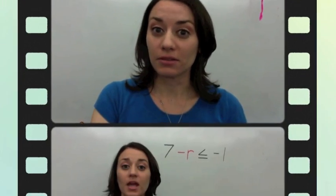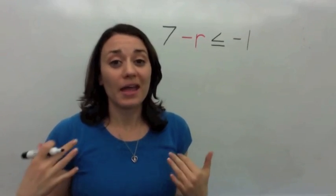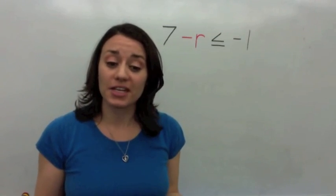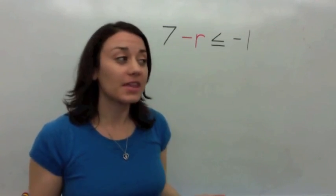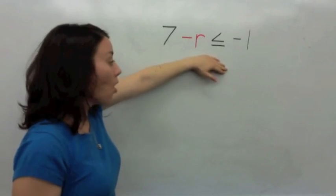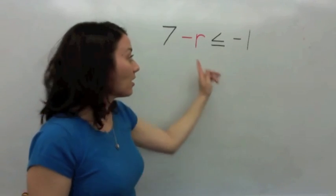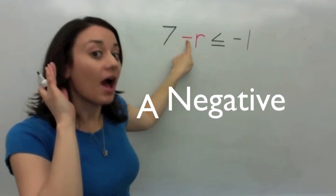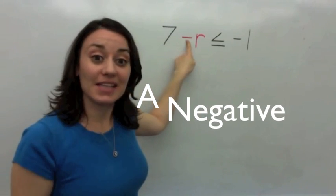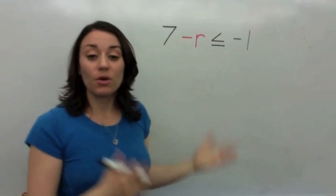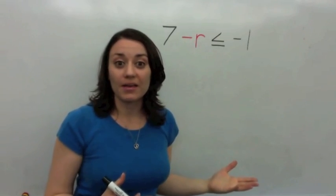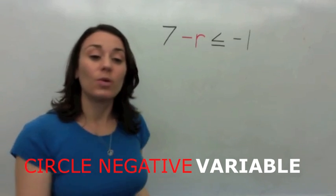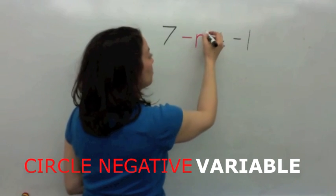I really don't like those negatives. Now, you all know that I am not a negative person, but sometimes you have to consider the negative. Look at this inequality. What is touching the letter? A negative — exactly. So if you are going to try and solve this inequality, the first thing you do is circle the letter which has a negative attached to it.